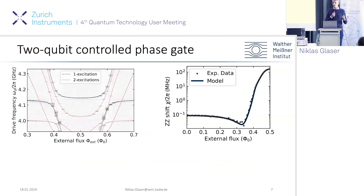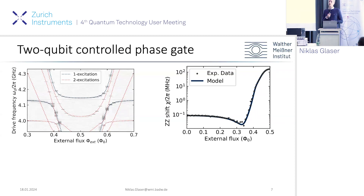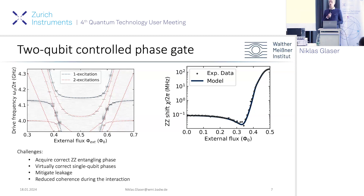This model compares nicely to experiment with good model matching. We also see that the ZZ coupling can be strongly tuned — from 20 kHz at the sweet spot at 0.35 external flux up to 150 MHz in ZZ rate. To employ the controlled phase gate, we must acquire the correct ZZ entangling phase, correct single-qubit phases, ensure no leakage to coupler states after the gate, and cope with reduced coherence during the interaction due to increased sensitivity to flux noise.